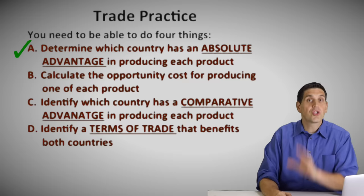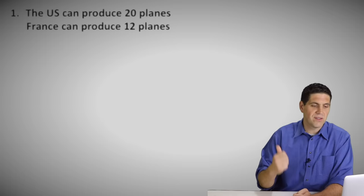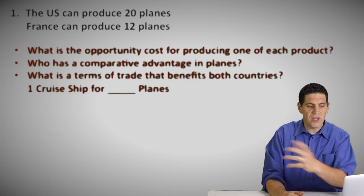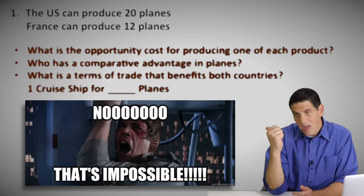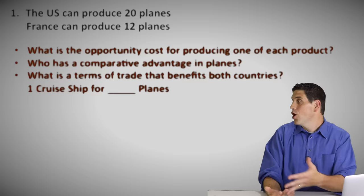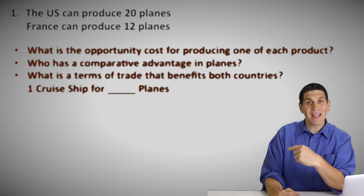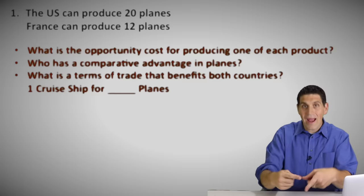Let's move on to the other skills: calculating opportunity costs, identifying comparative advantage, and terms of trade. Going back to that first scenario — the U.S. can produce 20 planes and France can produce 12 planes. What's the opportunity cost for producing one of each product? Who has a comparative advantage in planes? And what is the terms of trade that benefits both countries? You can't answer those questions yet because we don't have enough information. To get into comparative advantage, we have to know what else these countries can produce. So let's add that information.